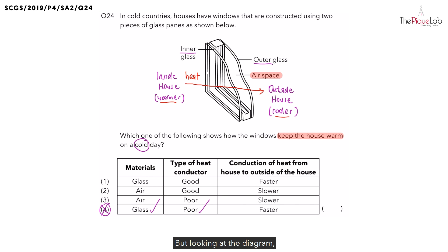Looking at the diagram, what does the heat pass through? We can see the heat is able to pass through the glass. But is it only passing through the glass? No, the heat can also pass through the airspace. So the air must somehow be able to keep the house warm even on a cold day.